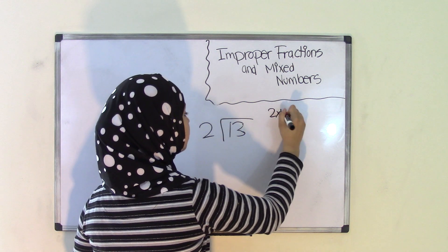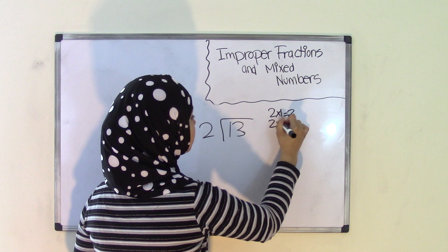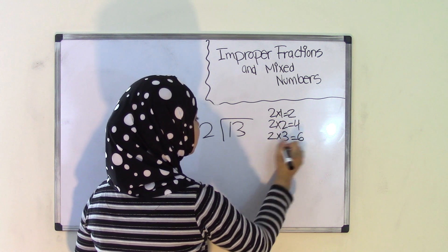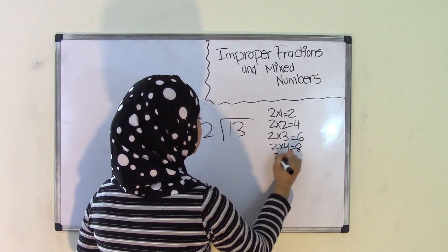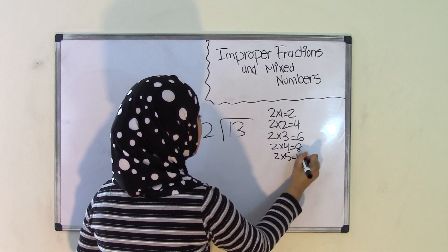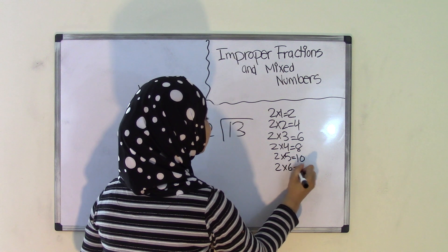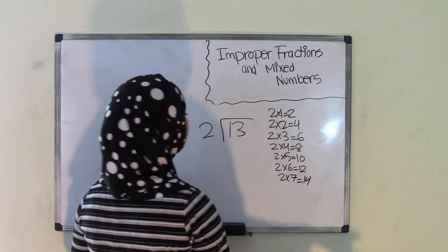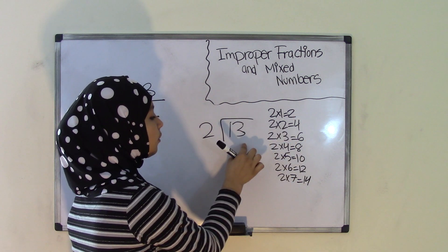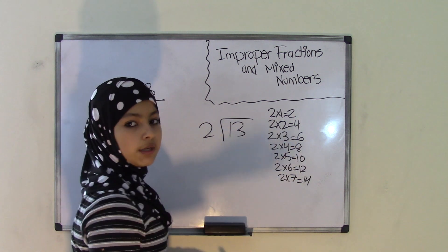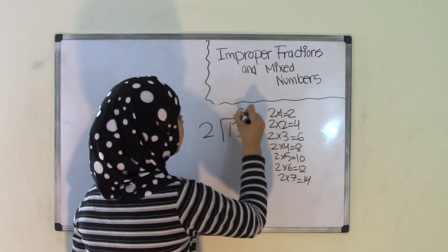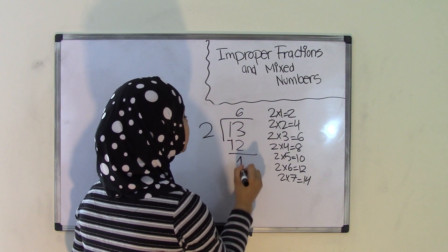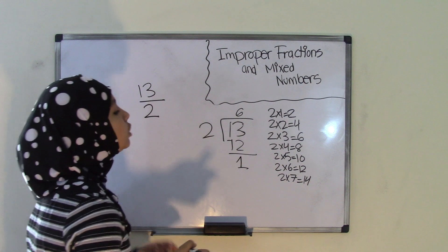How many times does 2 go into 13? Let's find out. 2 times 1 is 2. 2 times 2 is 4. 2 times 3 is 6. 2 times 4 is 8. 2 times 5 is 10. 2 times 6 is 12. 2 times 7 is 14 — but 14 is greater than 13, so we go with our previous product of 12. So 2 times 6 is 12. The difference of 13 and 12 is 1, so you get a remainder of 1 and a quotient of 6.